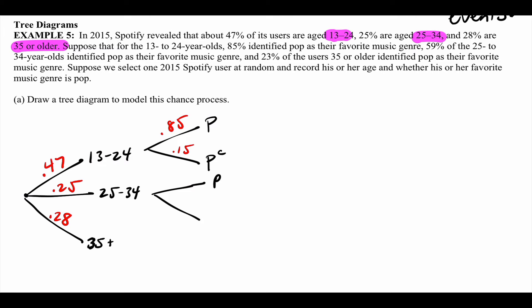For the 25-to-34 group: 59% prefer pop, so 41% do not. For 35 and older: 23% prefer pop, and 77% do not. Tree diagrams are great because they're extremely visual — you can literally follow the branches. That's what we're going to do. Even though I use a tree diagram, I can still use formulas if I need to.